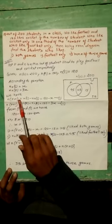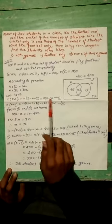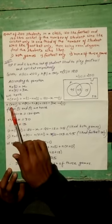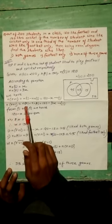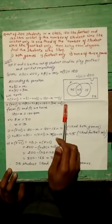n(F ∩ C) is equal to n(C) minus n(C ∩ F'), which equals 120 minus X, this is equation 1. In the same way, n(F ∩ C) equals n(F) minus n(F ∩ C'), which equals 150 minus 3X, this is equation 2.